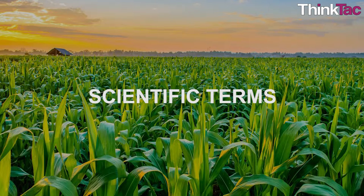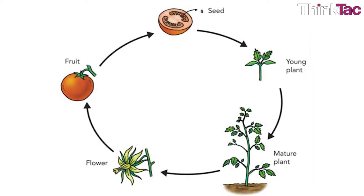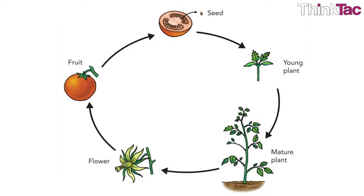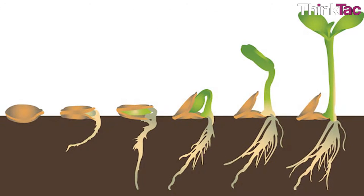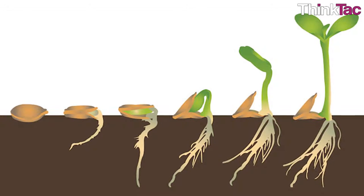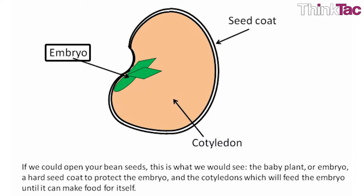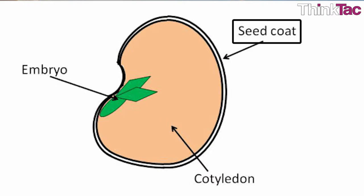Some scientific terms: The life cycle is the sequence of structural and functional changes that happen to any organism between the start and end of its life. Germination is the process by which plants grow from seeds or similar structures. A plant embryo is the part of a seed that forms the first parts after germination. The cotyledon is the part of a seed that contains nutrition for the embryo. The seed coat is the outer covering of a seed.